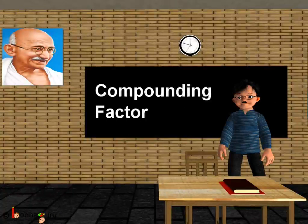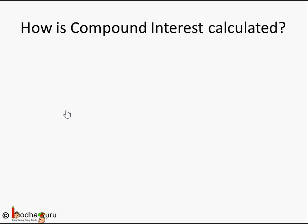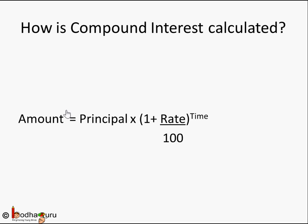Hello friends, in this lesson we are going to learn what is the role of the compounding factor in compound interest and how fast the compounding factor is playing. Remember how compound interest is calculated — we learned this formula: Amount = Principal × (1 + Rate/100) raised to the duration.